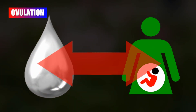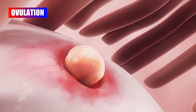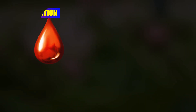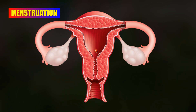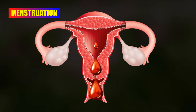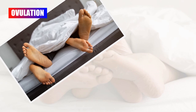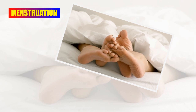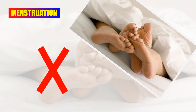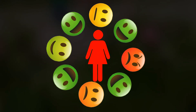Ovulation is connected to pregnancy. When women get ovulation, they discharge eggs to meet with a sperm. The period is not connected to pregnancy — women's bodies discharge blood during this period of time. If a woman has contact with her partner during ovulation she can become pregnant, but if a woman contacts her partner during the period she cannot be pregnant.